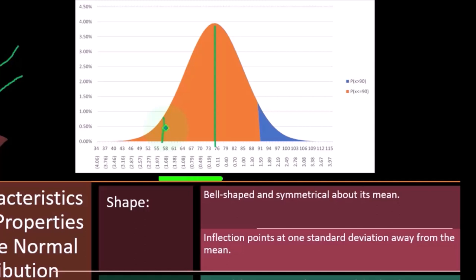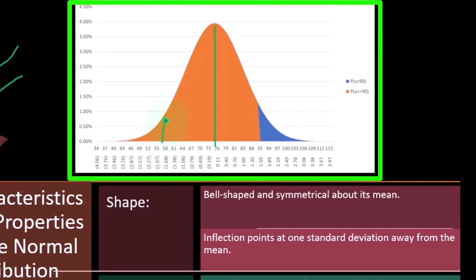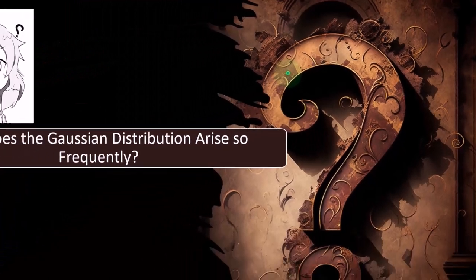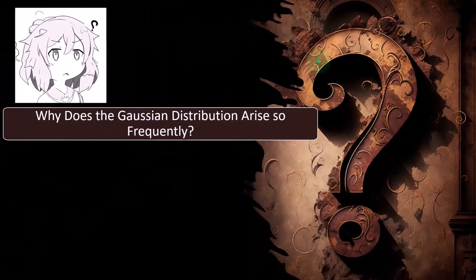Does it approximate a bell curve, or possibly some other distribution, like a Poisson distribution or something. If it approximates a bell curve, then we graph the bell curve out. And then we see if the bell curve, having its special characteristics, allows us to give us predictive power over the thing that the data set is representing.